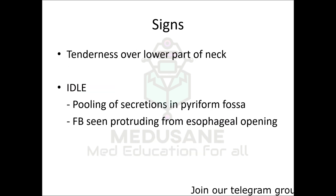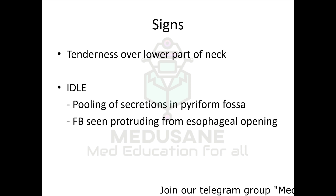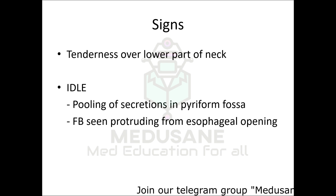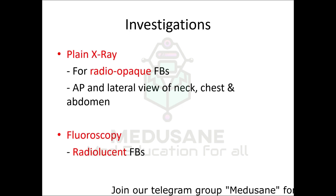On examination, there is generally tenderness over the lower part of the neck or at a particular point which indirectly indicates the location of the foreign body. On indirect laryngeal examination, we see pooling of secretions in the pyriform fossa, and the patient will not be able to clear those secretions by swallowing. Sometimes the foreign body can be seen protruding from the esophageal opening in the postcricoid area and may be visible on indirect laryngoscopy.